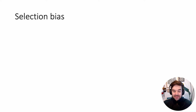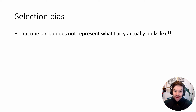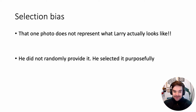This specifically would be an example of selection bias, which is one of the most common forms of bias you'll see in epidemiologic studies. Why is this selection bias? Well, that one photo doesn't represent what Larry actually looks like. It's not like it was randomly selected — no. This was a systematic error. He selected it purposely. That's why we would call this a selection bias.